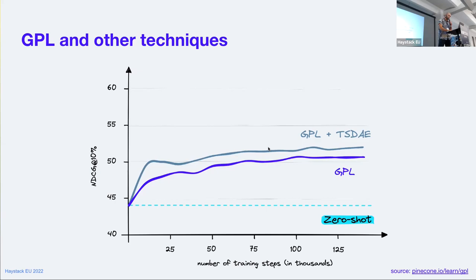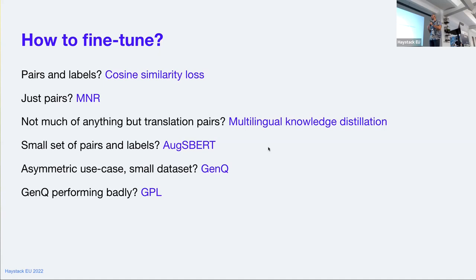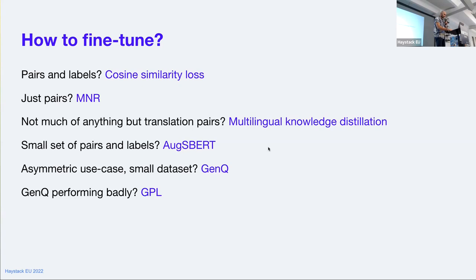To summarize: if we have pairs and labels, we can use cosine similarity loss. If we just have pairs, we use multiple negatives ranking. If we don't have much but have a model trained in a source language and translation pairs, we use multilingual knowledge distillation. With small sets of pairs and labels, we use augmented data methods like AugSBERT. For asymmetric use cases, we use GenQ, and if GenQ doesn't perform well, we can try GPL. That's the end of the talk — there's an ebook that covers everything in a lot more detail.